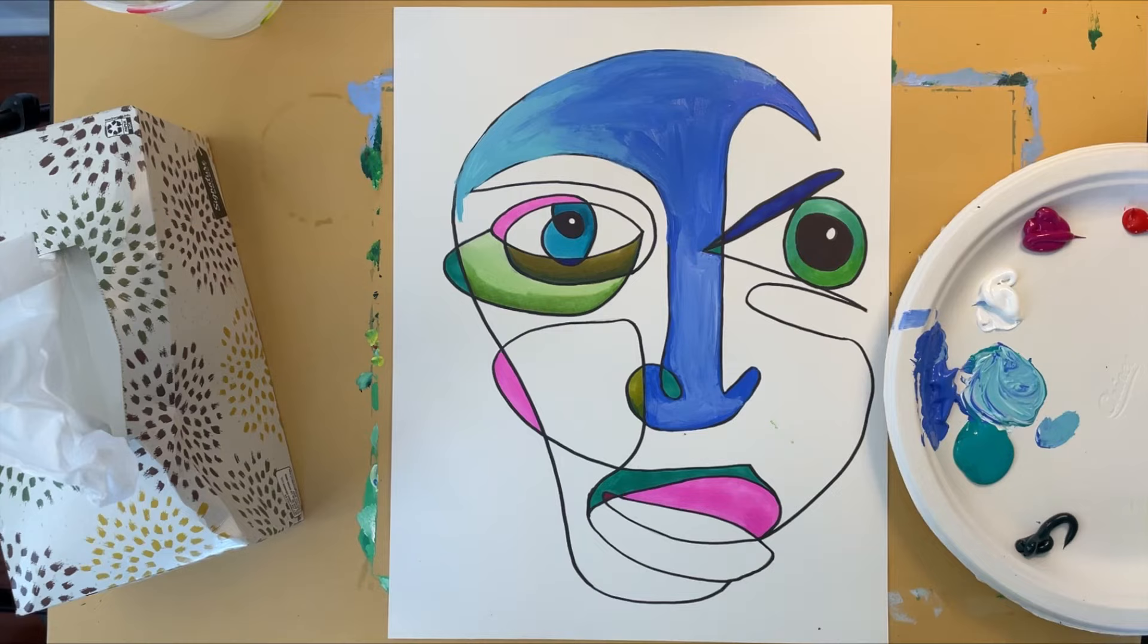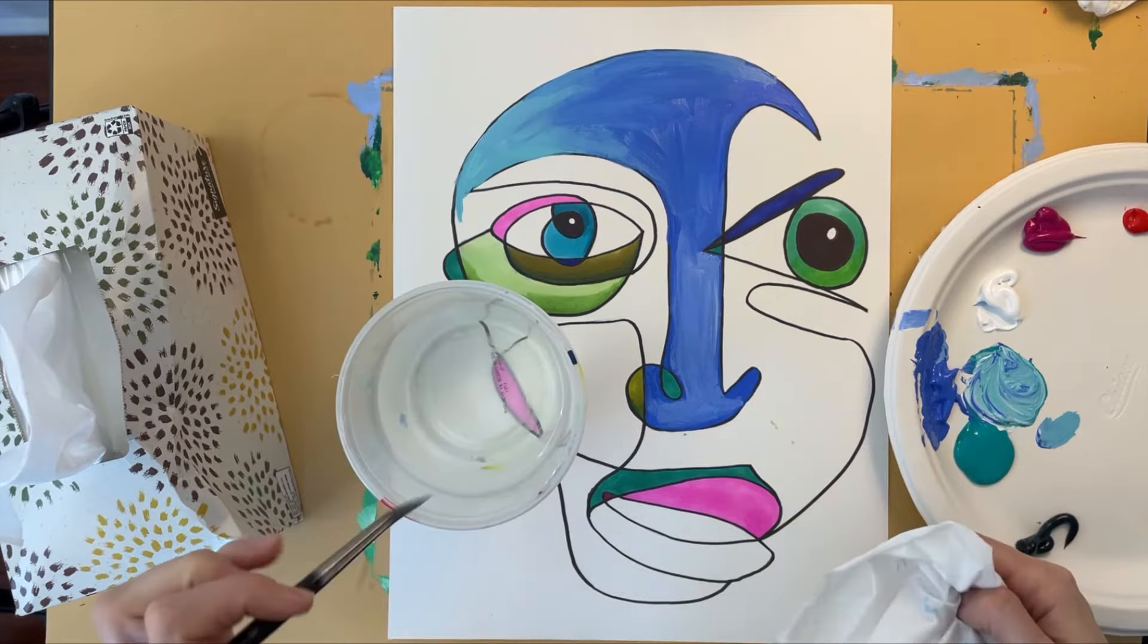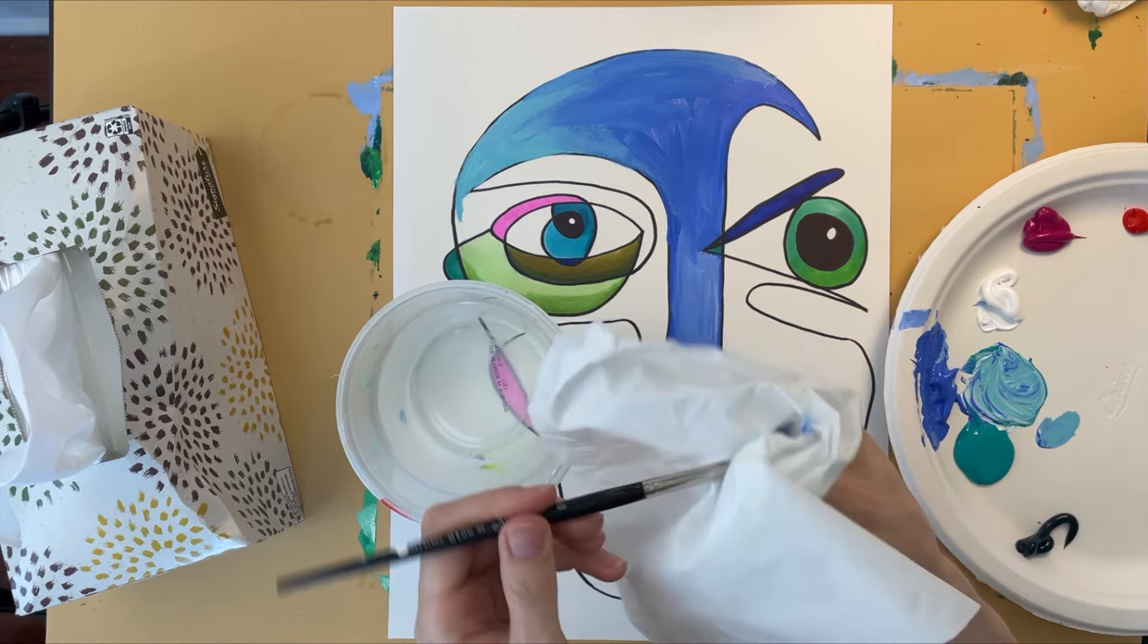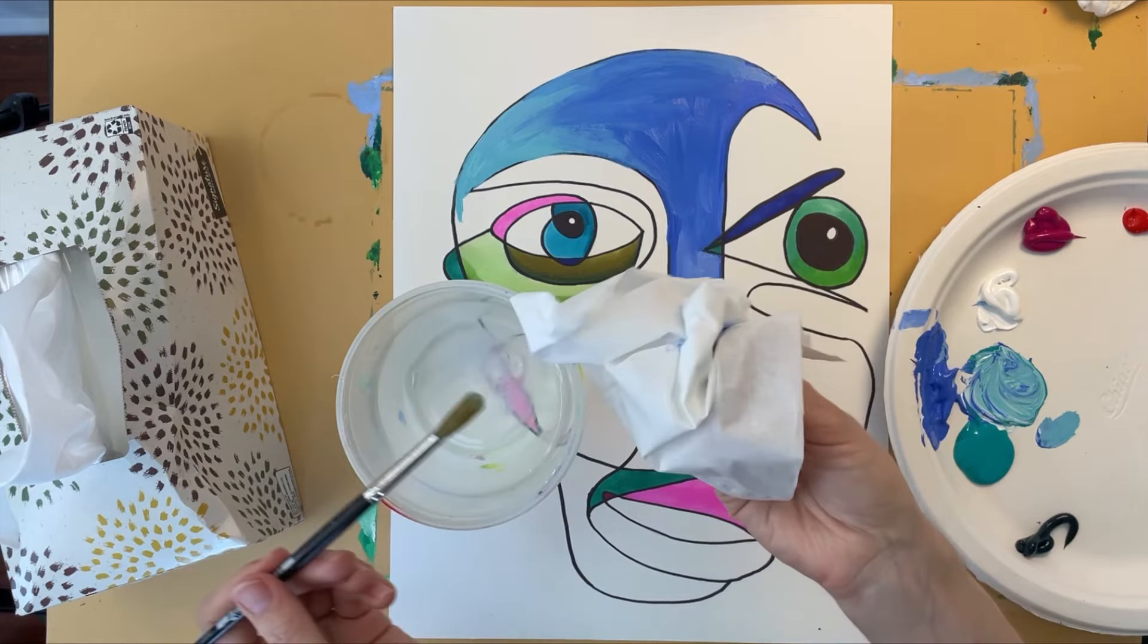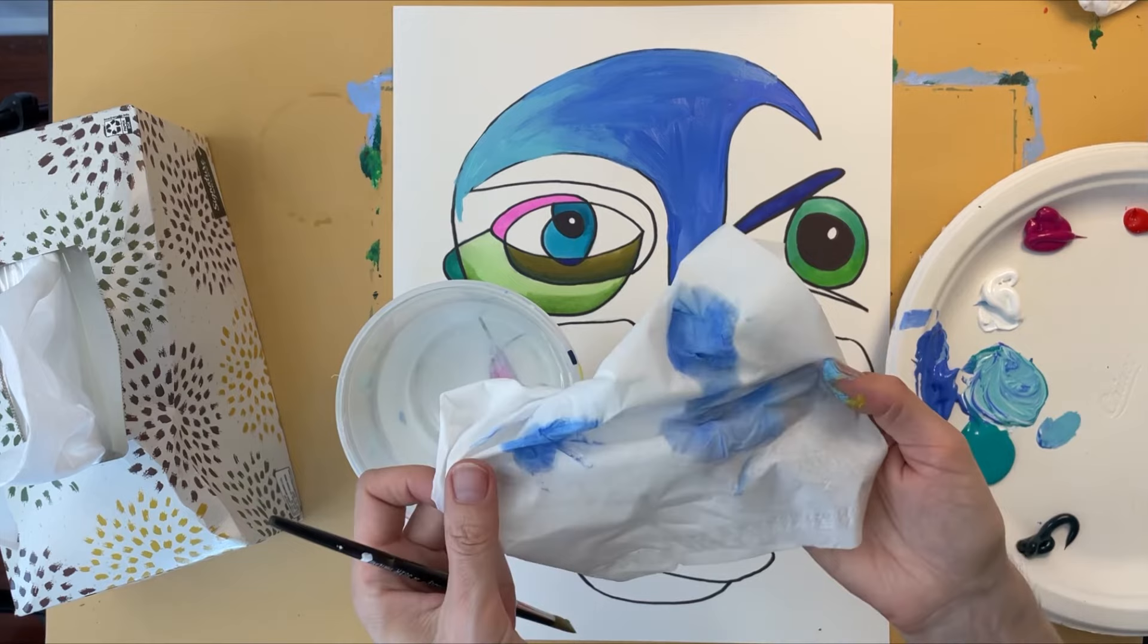To avoid washing paint down the drain, whenever you want to switch colors you can dip your brush in the water, then pinch and gently windshield wiper it back and forth inside a Kleenex. I repeat: dip, pinch, and gently windshield wiper. See how I just prevented all this paint from going into my water and getting washed down the drain.